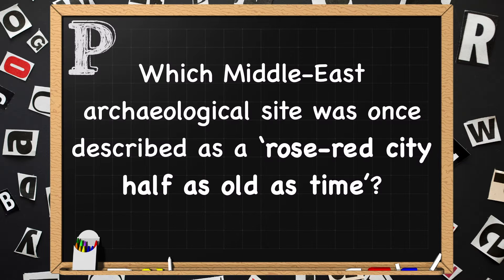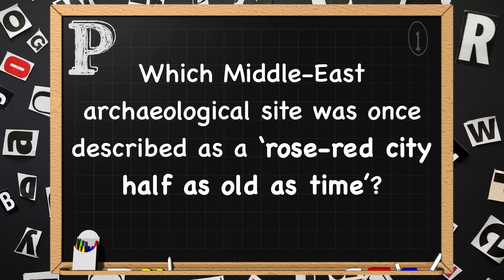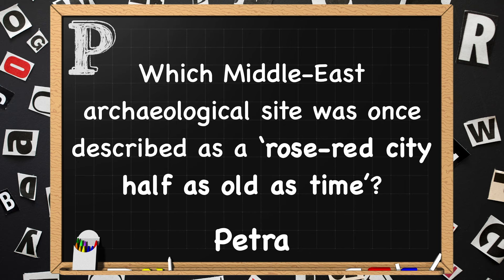Beginning with P. Which Middle East archaeological site was once described as a rose-red city half as old as time? The answer is Petra.